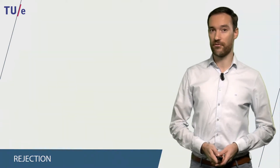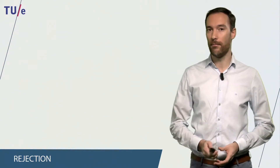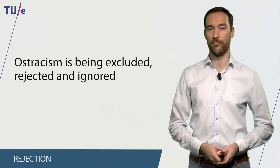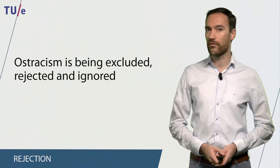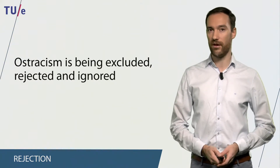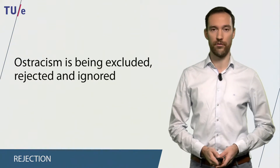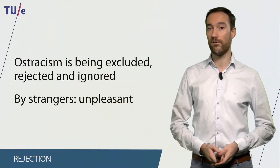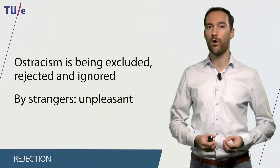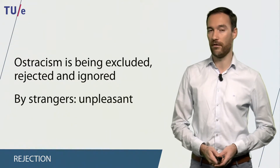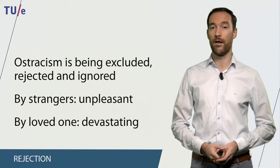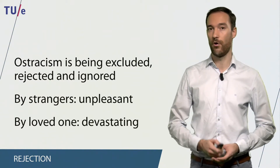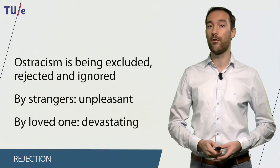The opposite of attraction is rejection, and the most important concept in rejection is ostracism. Ostracism is being excluded, rejected, and ignored. If you are ignored by a stranger, this can give you strong unpleasant feelings. But if you are ignored by a loved one, this can have devastating consequences on your health and your behavior.